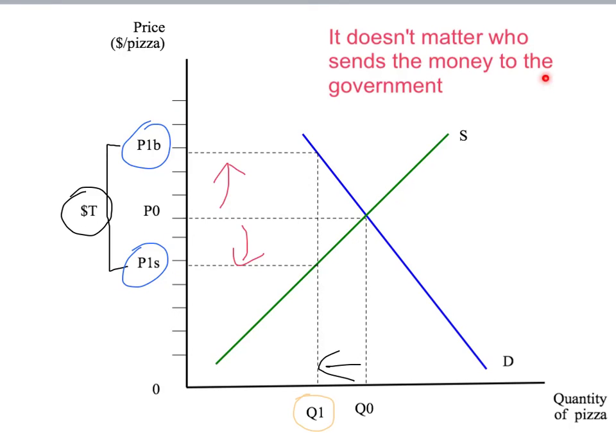Who sends the money to the government is, at best, a second-order question — it's about making the tax system as efficient as possible and doesn't affect any of our market predictions. We'll look at that in more detail in later presentations. That's all for now — talk to you later.